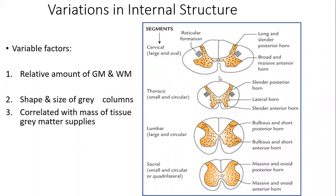In the cervical region, the spinal cord is large and oval in shape, with a long cylindrical posterior gray horn and a broad, massive anterior horn. Comparing the cervical segment with the thoracic segment: the thoracic segment is small and circular. There is hardly any posterior median septum present, and we have a much more cylindrical posterior horn compared to the cervical segment.